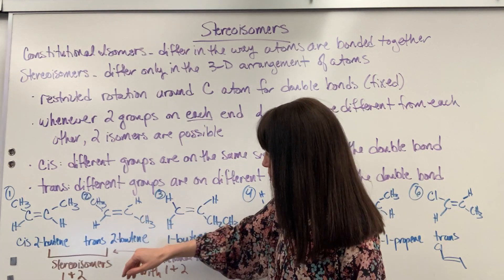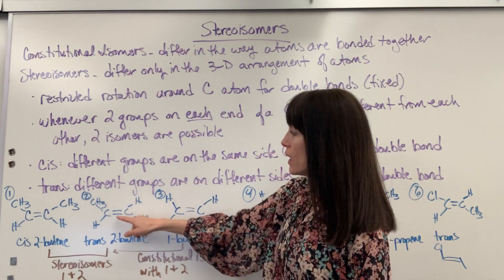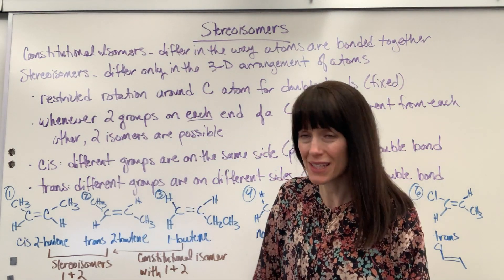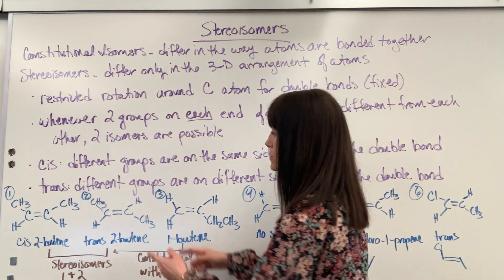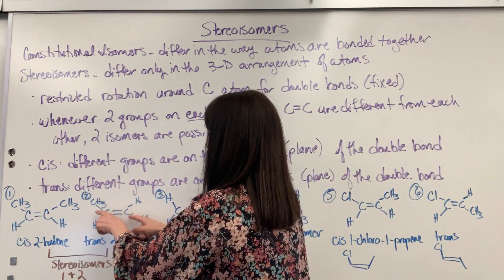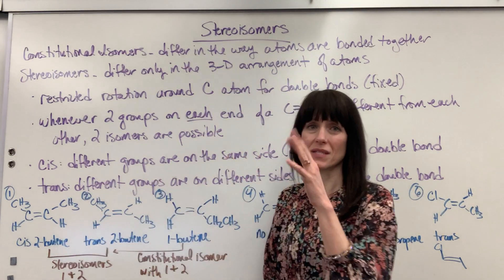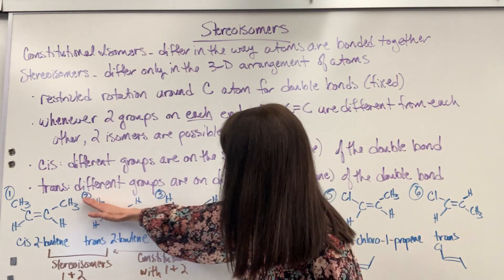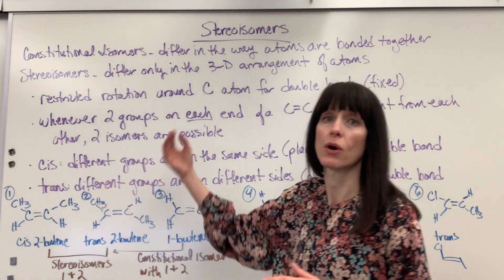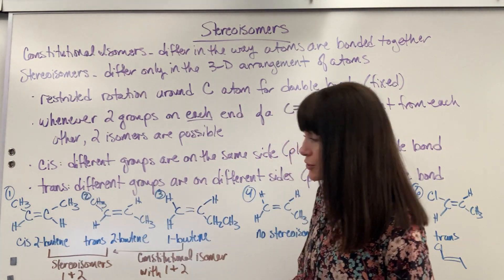Over here, again, we've got one, two, three, four — a double bond on the second carbon, so that's going to be 2-butene. But these two methyl groups connected to my double bond are on the opposite side of that double bond — opposite side, trans, going across. So that's trans-2-butene.